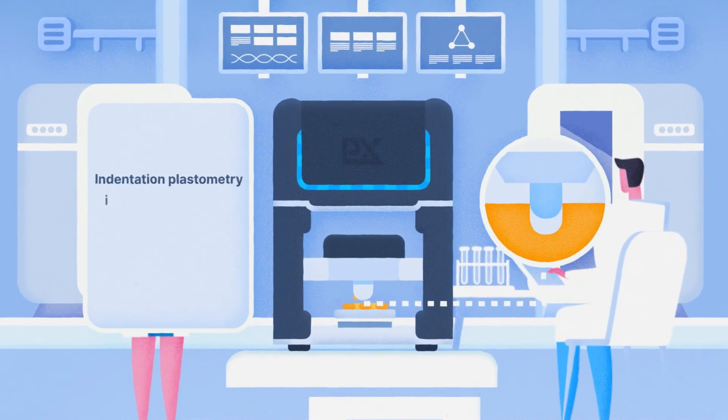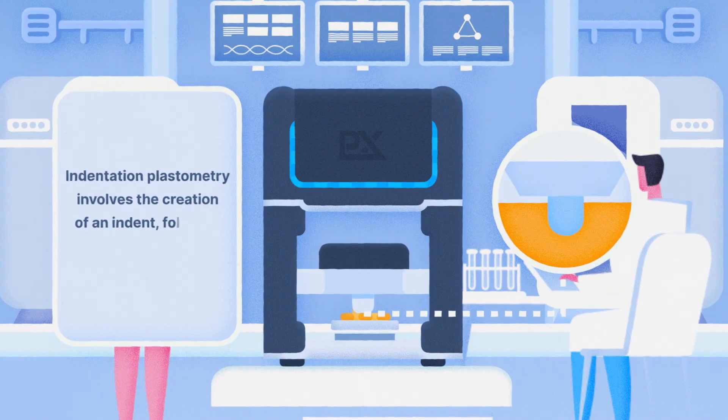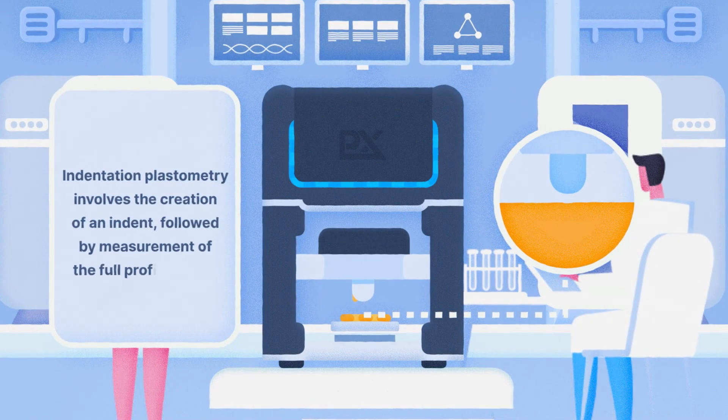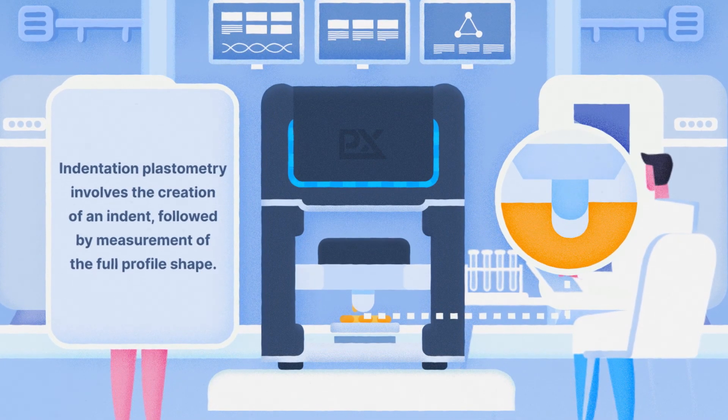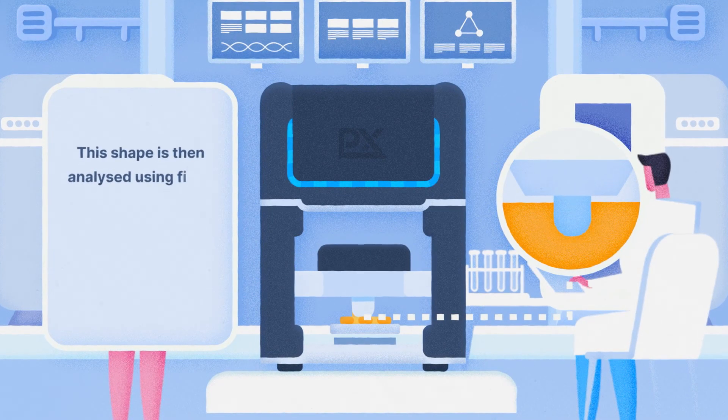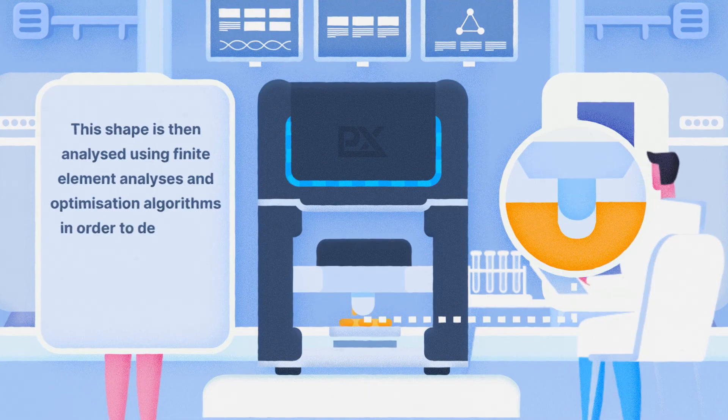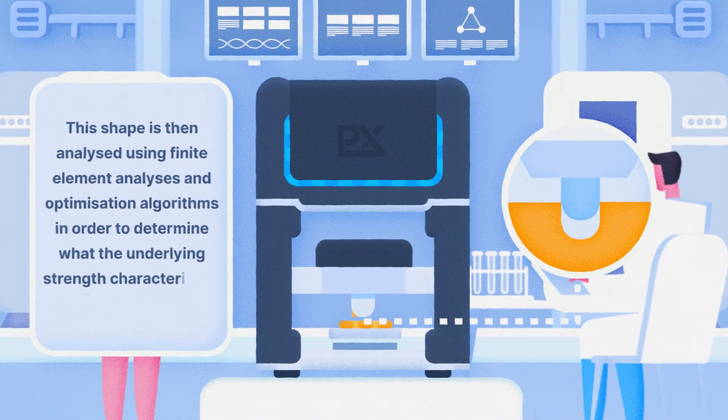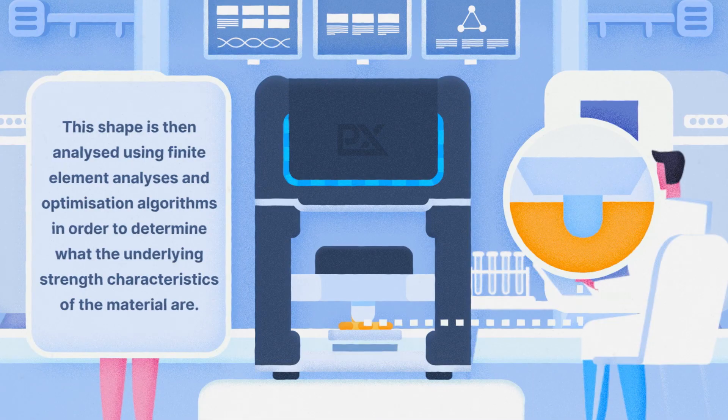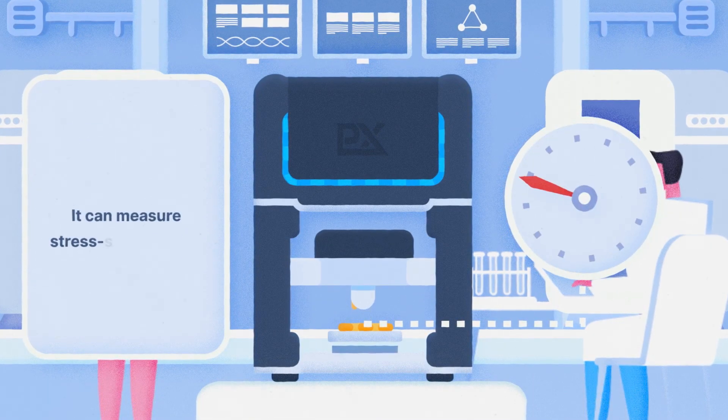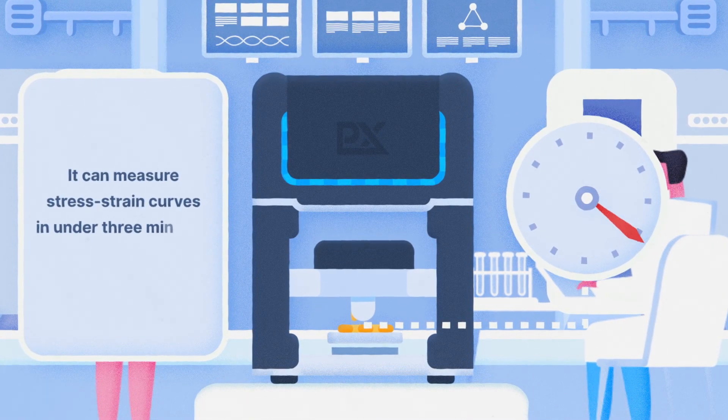Indentation plastometry involves the creation of an indent, followed by measurement of the full profile shape. This shape is then analyzed using finite element analyses and optimization algorithms, in order to determine what the underlying strength characteristics of the material are. It can measure stress-strain curves in under three minutes.